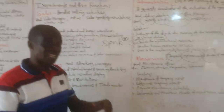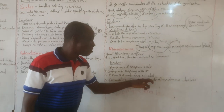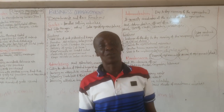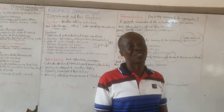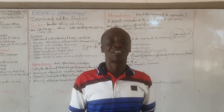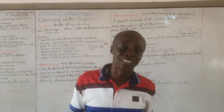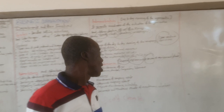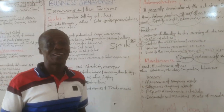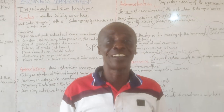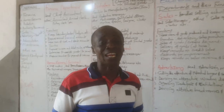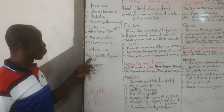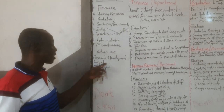The last maintenance function is to document and maintain records of maintenance activities — keeping records of whatever was carried out, so you know on which day a replacement or repair was done. That brings us to the end of the topic on departments and their functions. There are other departments you should also research: research and development, legal, transport, and audit — including internal and external auditors.